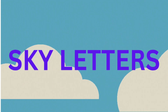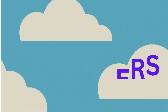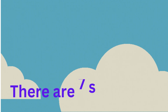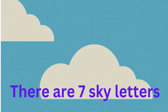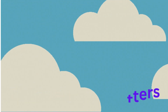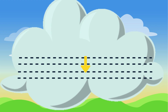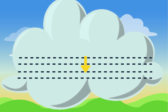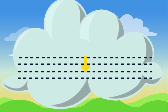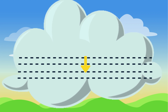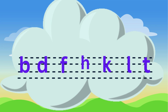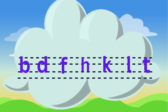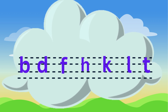Sky Letters. There are seven sky letters. They start from the first line and end at the third line. These are P, D, F, H, K, L, and T.